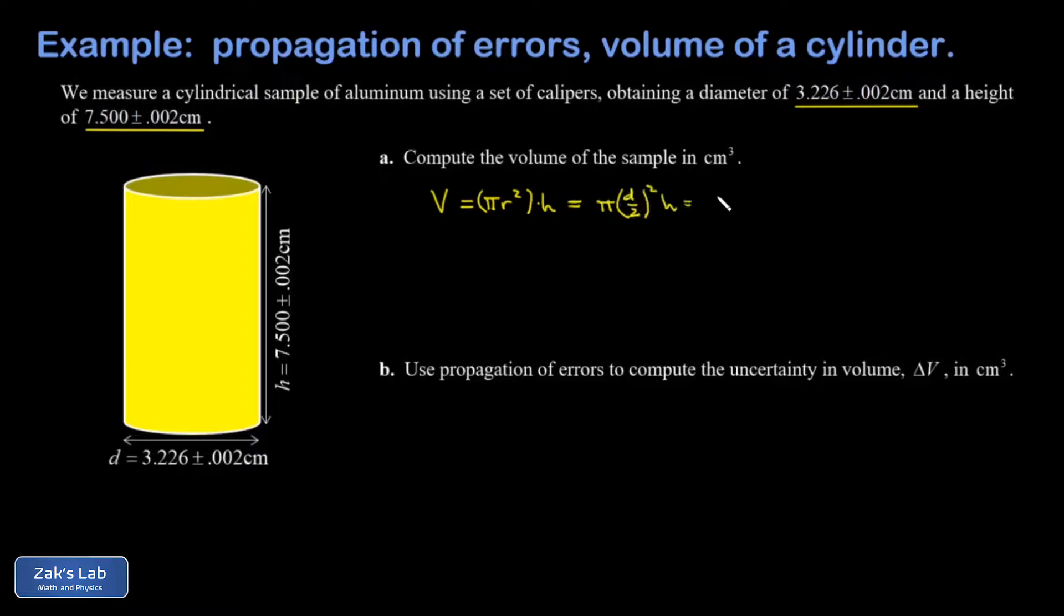When I square the diameter over 2, I get a factor of one-fourth, and I'll just pull that out in front. So we're using the formula one quarter pi diameter squared times the height.